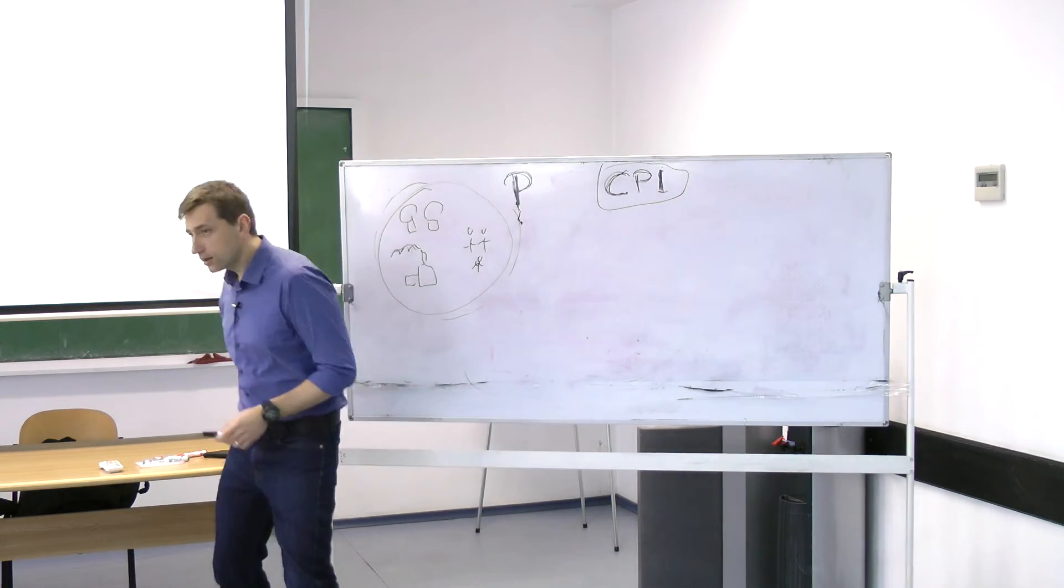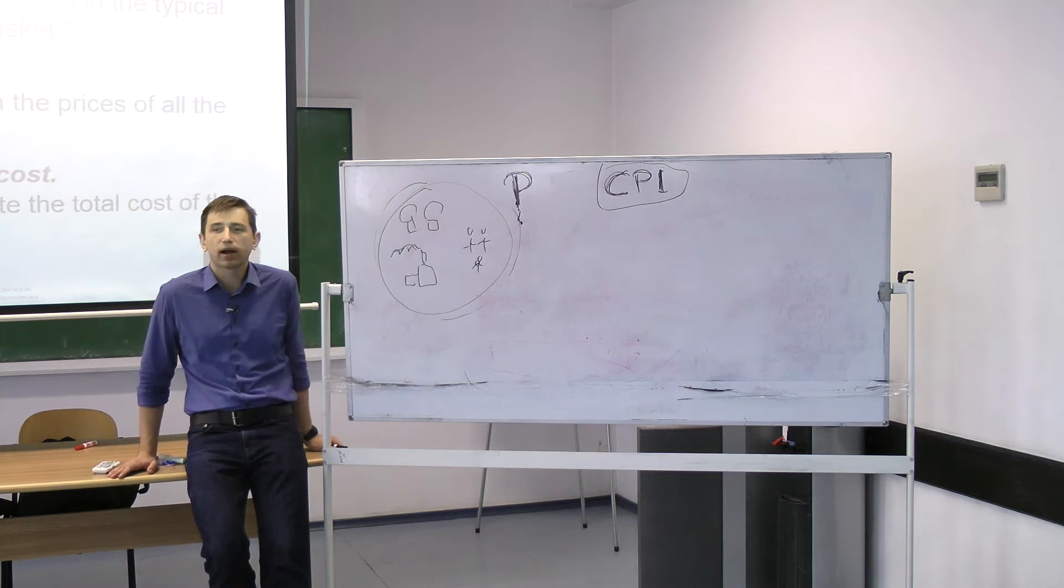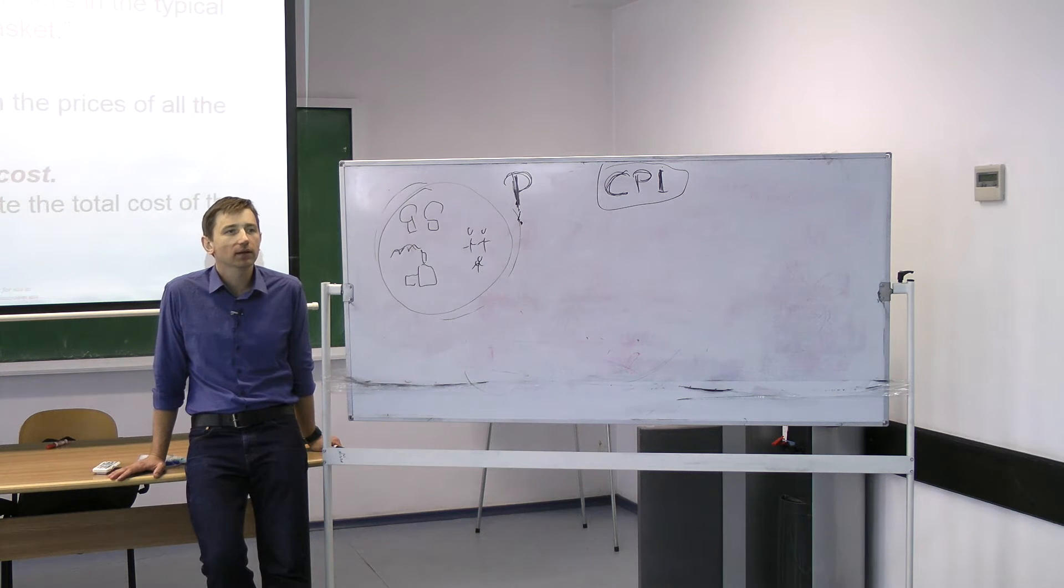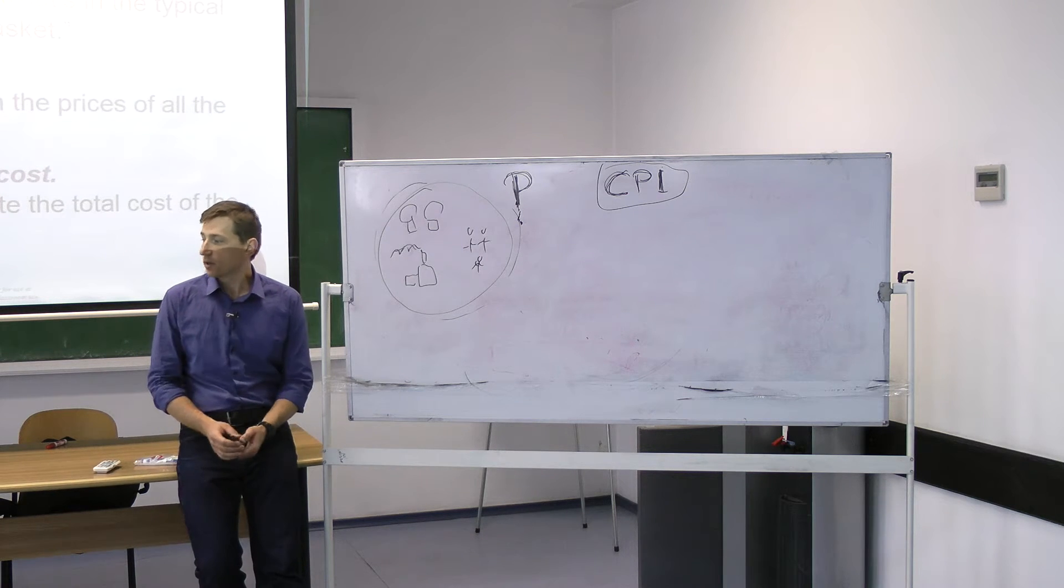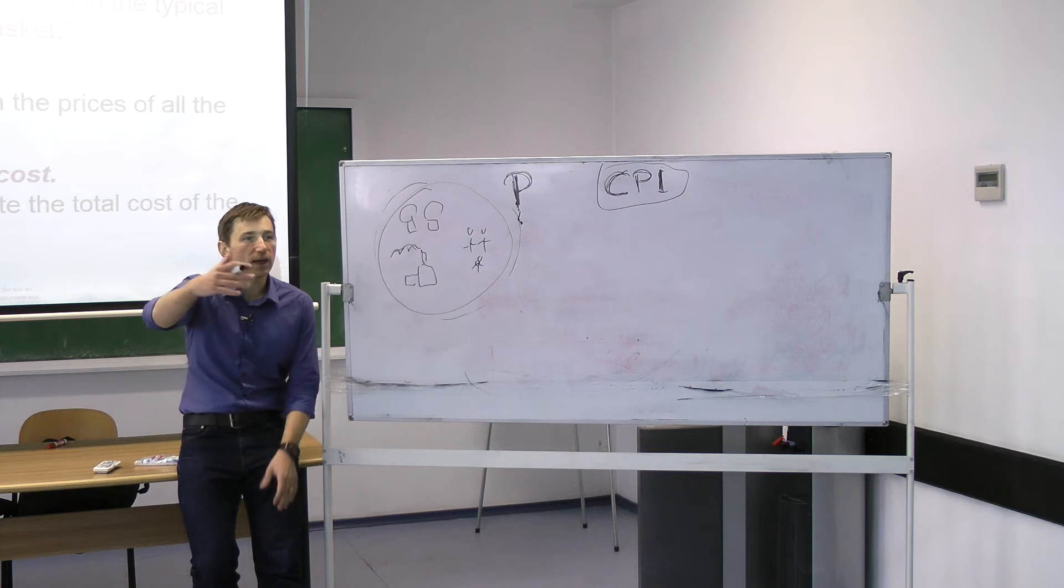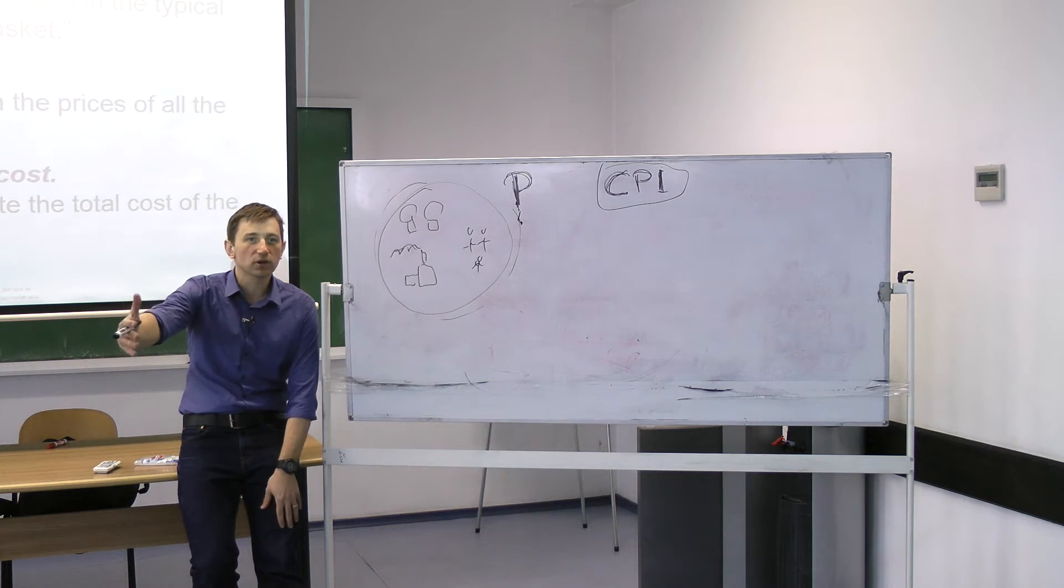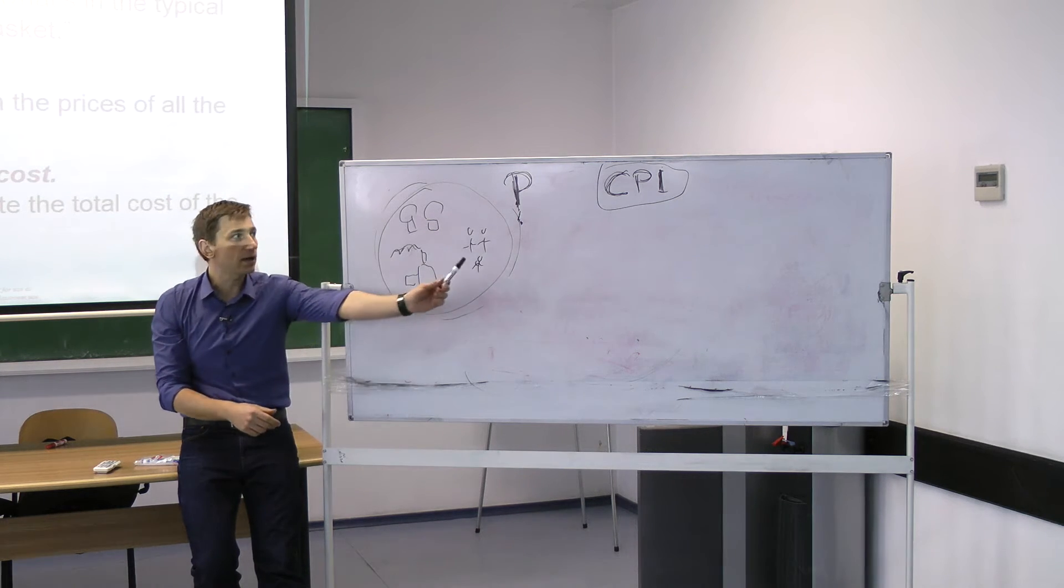It was called deflator. The GDP deflator is also a measurement for inflation. We use the GDP deflator to see how to make the adjustments from the nominal GDP to the real GDP.